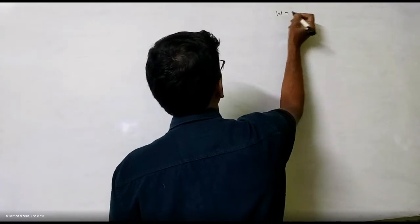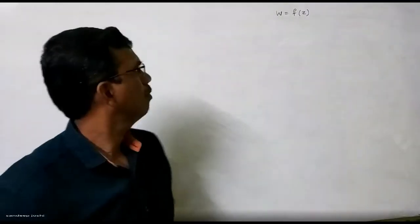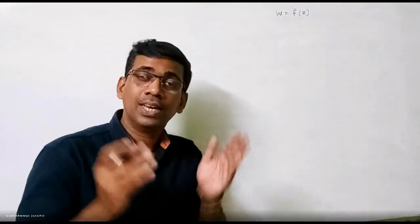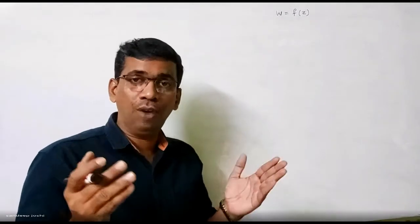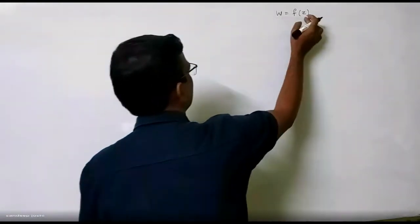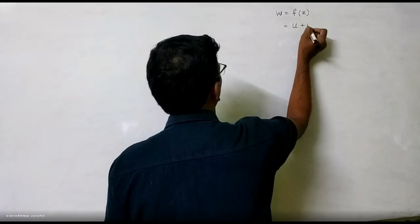When we say W is equal to F of Z, what is W is equal to F of Z? Yes, it is a function of a complex variable. Is it true? Yes sir. And this is F of Z. F of Z is where we are, U plus IV.